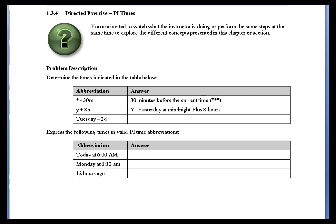For example, say today is the 22nd — that would be the 21st of June at 8 o'clock. That would be yesterday plus 8 hours.